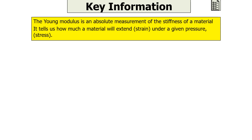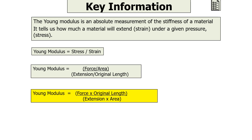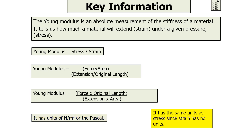The Young Modulus is an absolute measurement of the stiffness of a material — it tells us how much a material will extend under a given pressure. The Young Modulus is stress divided by strain. Since stress is force over area and strain is extension over original length, we can rewrite this as the Young Modulus equals force times original length divided by extension times area. It has units of newtons per metre squared, or pascals, since strain has no units itself.